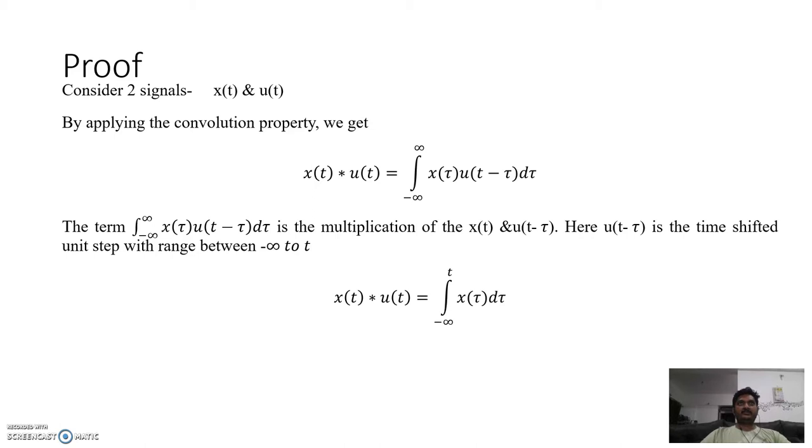Therefore, x(t) convolution u(t) equals the integral from minus infinity to t of x(τ) dτ. If we take the Laplace transform of this, we get L{x(t) * u(t)} equals L{integral from minus infinity to t of x(τ) dτ}.